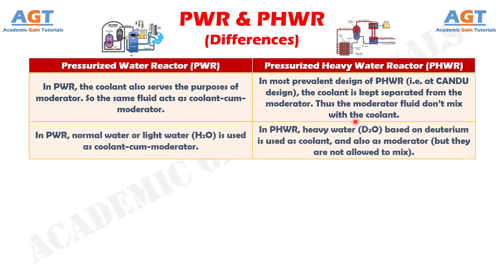Number 2. In a pressurized water reactor, normal water or light water is used as coolant-cum-moderator. Whereas, in a pressurized heavy water reactor, heavy water based on deuterium is used as both coolant and moderator, but they are not allowed to mix.